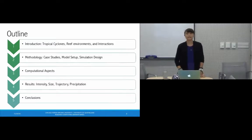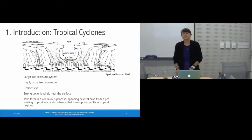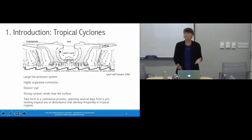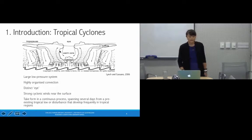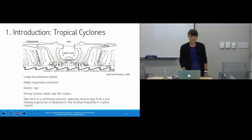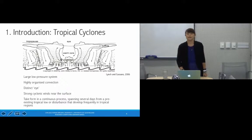We'll start with a fairly basic idealized cross-section diagram of a tropical cyclone. Tropical cyclones are very large low-pressure systems characterized by highly organized convection cells with updrafts and downdrafts. These convection bands are associated with heavy rainfall; the heaviest rainfall typically occurs in the eye wall convection band on either side of the eye.